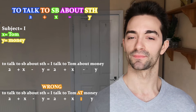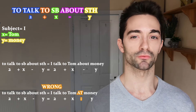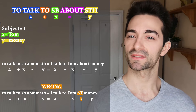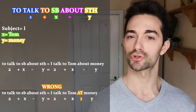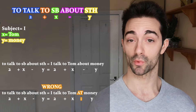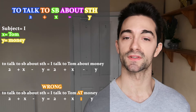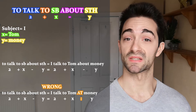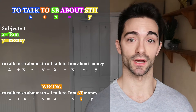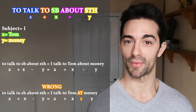If, however, I said I talk to Tom at money, this would be wrong because 'at' is a preposition which is a constant value. But by saying 'at', you are telling me that 2 plus x minus y equals 2 plus x divided by y, which is mathematically incorrect. In this instance I've used the simple present for 'I talk', but depending on the situation you can use any tense that you need. You can say I talked, I was talking, I will be talking, I should have talked to Tom about money.